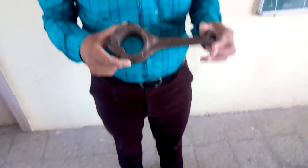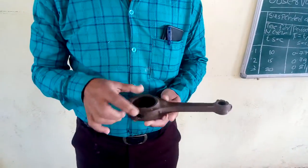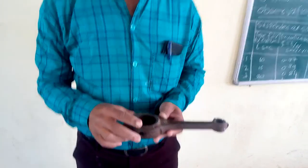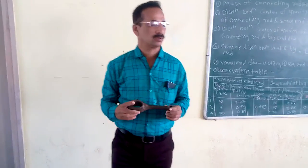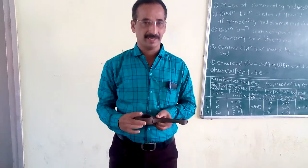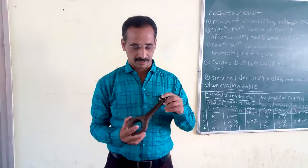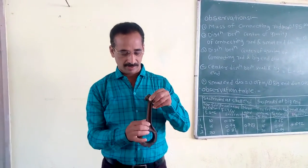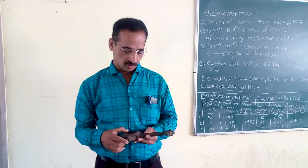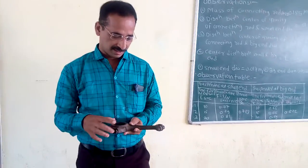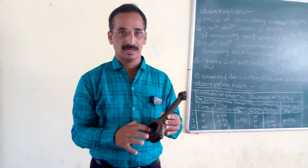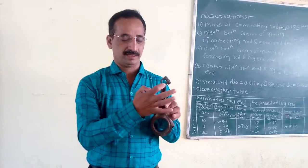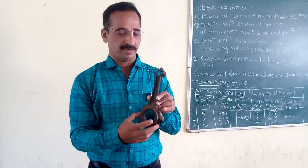Generally, this is the connecting rod. This connecting rod is an irregularly shaped body. There is no standard formula available for determining the radius of gyration or locating the center of gravity of the connecting rod. This is the small end and this is the big end.